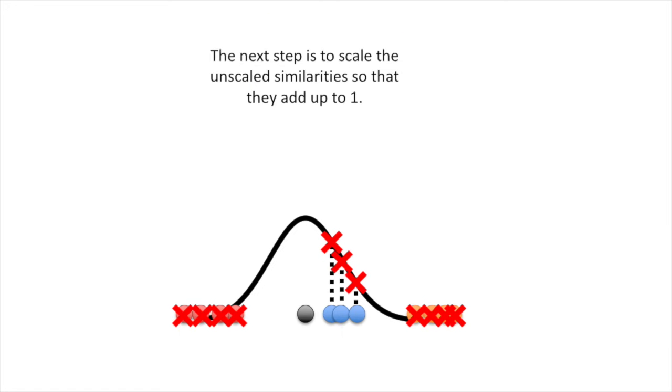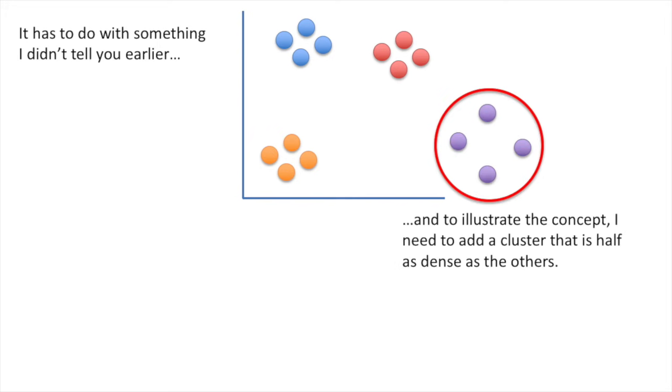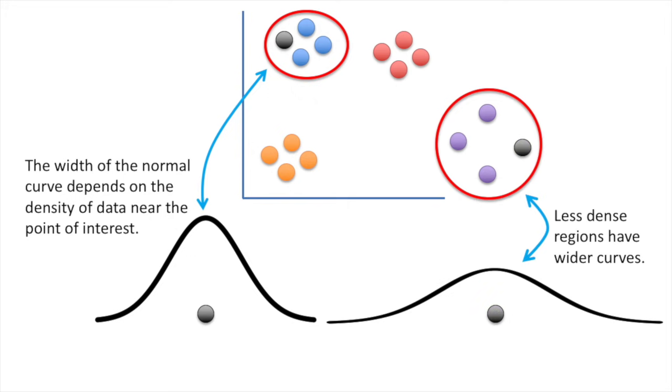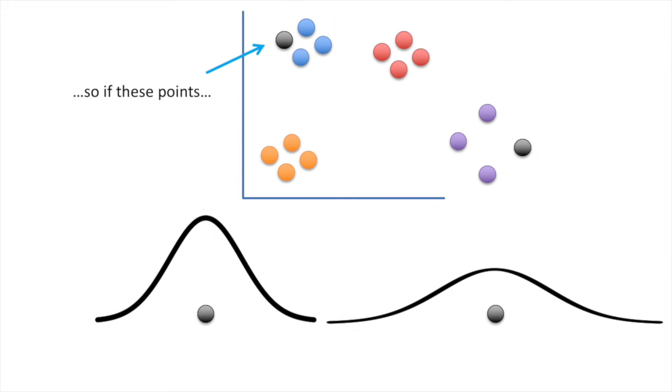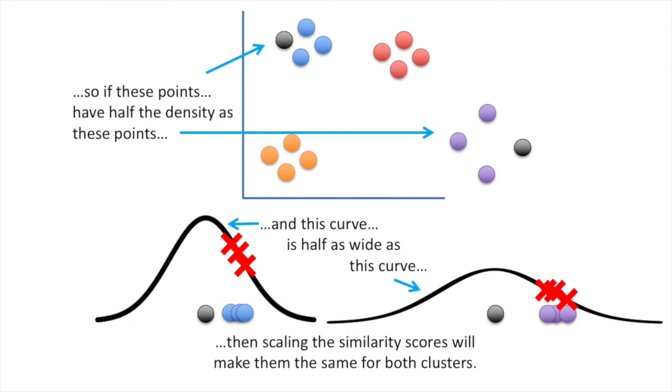The next step is to scale the unscaled similarities so that they add up to one. Why do the similarity scores need to add up to one? It has to do with something I didn't tell you earlier. And to illustrate the concept, I need to add a cluster that is half as dense as the others. The width of the normal curve depends on the density of data near the point of interest. Less dense regions have wider curves. So if these points have half the density as these points, and this curve is half as wide as this curve, then scaling the similarity scores will make them the same for both clusters.